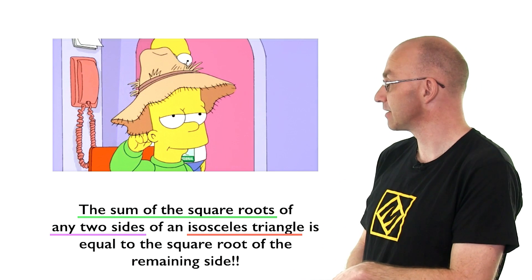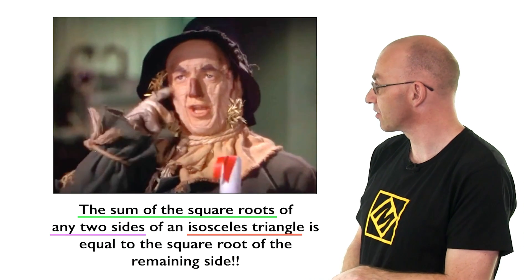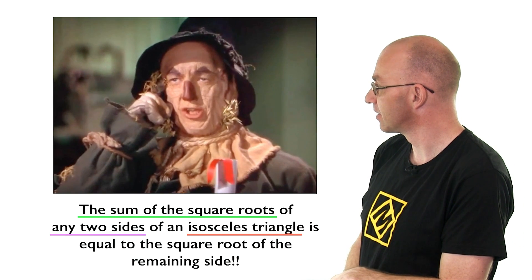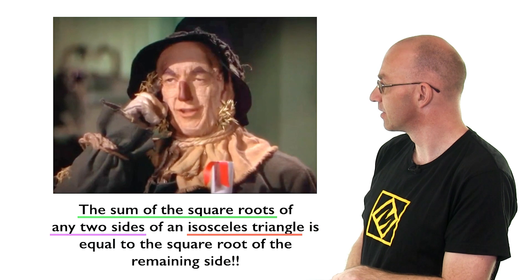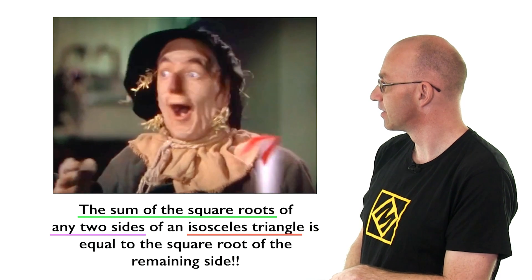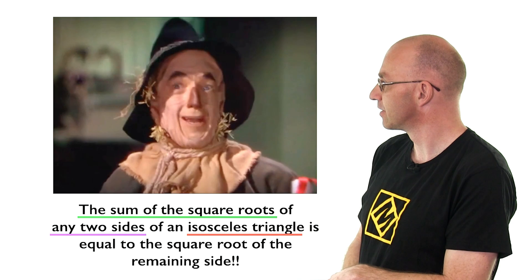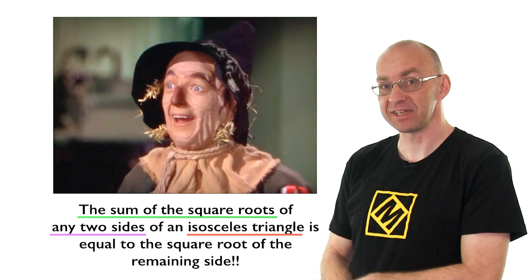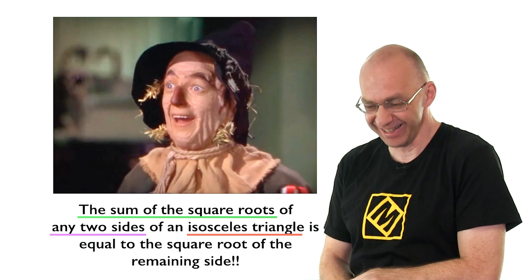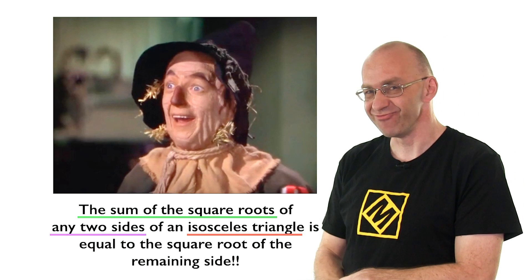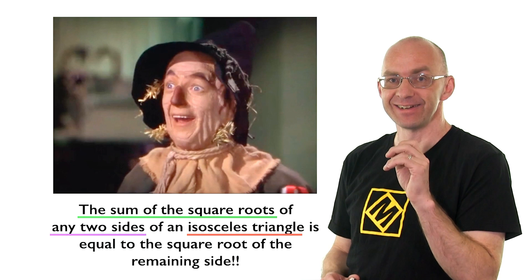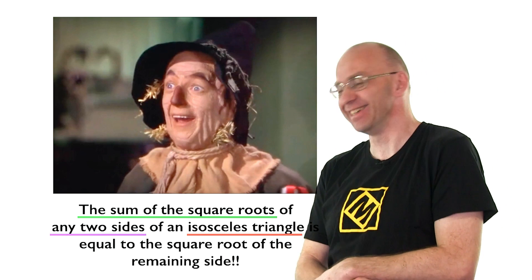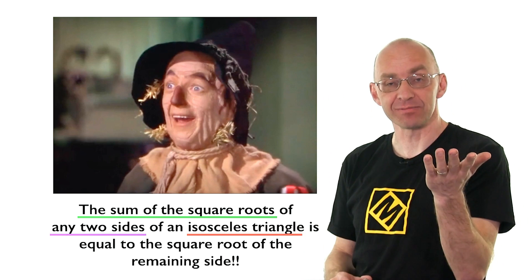The scarecrow in the Wizard of Oz. Actually, if you go to the movie and you find the scarecrow: Some of the square roots of any two sides of an isosceles triangle is equal to the square root of the remaining side. Oh, joy! Ratchet! I've got a brain! So he says this after he's got the brain. Looks like he got a bad deal.